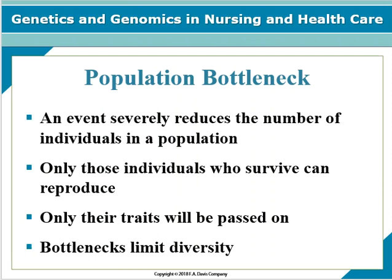Population bottleneck is a more dramatic population change where some event severely reduces the number in a population, so only those who survive will reproduce and only their traits will be passed on — greatly limiting genetic diversity. For example, the northern elephant seal: in the 1890s the seals were hunted to near extinction with about 20 remaining, and then reproduced to now number more than 30,000. There is less diversity in the northern elephant seal than the southern elephant seal, which did not bottleneck.